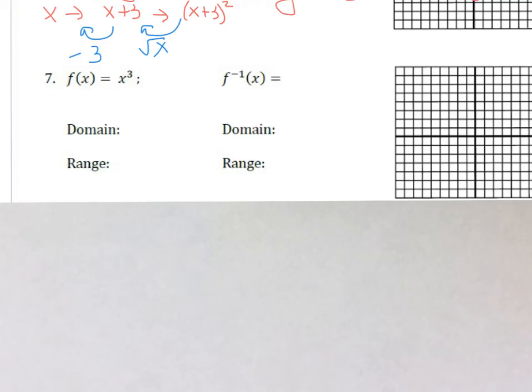Okay, and last but not least for the graphs, we've got x to the third. So we have x, and then that changes to x to the third. So to go backwards from x to the third, that's going to be the cube root, just like the backwards of x squared is a square root. So our inverse function is a cube root.